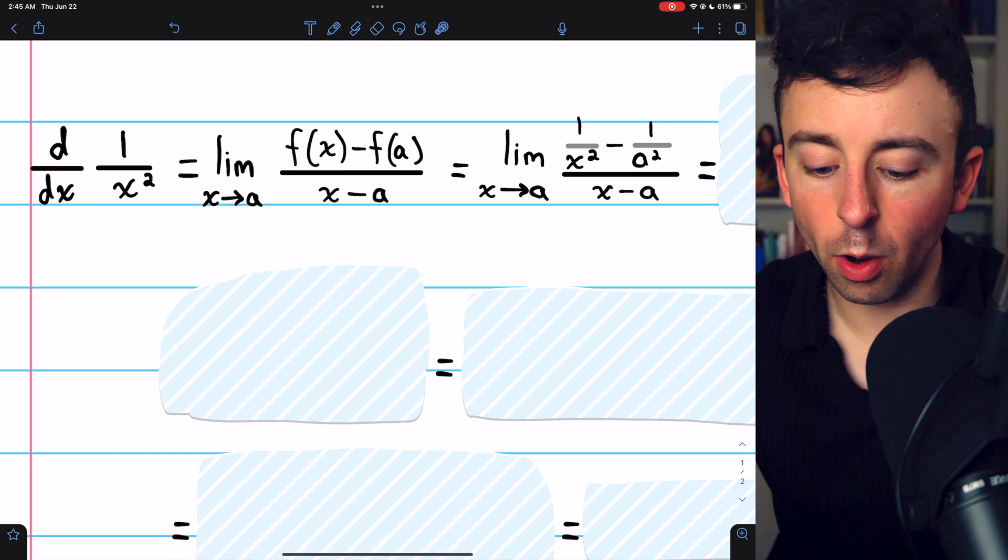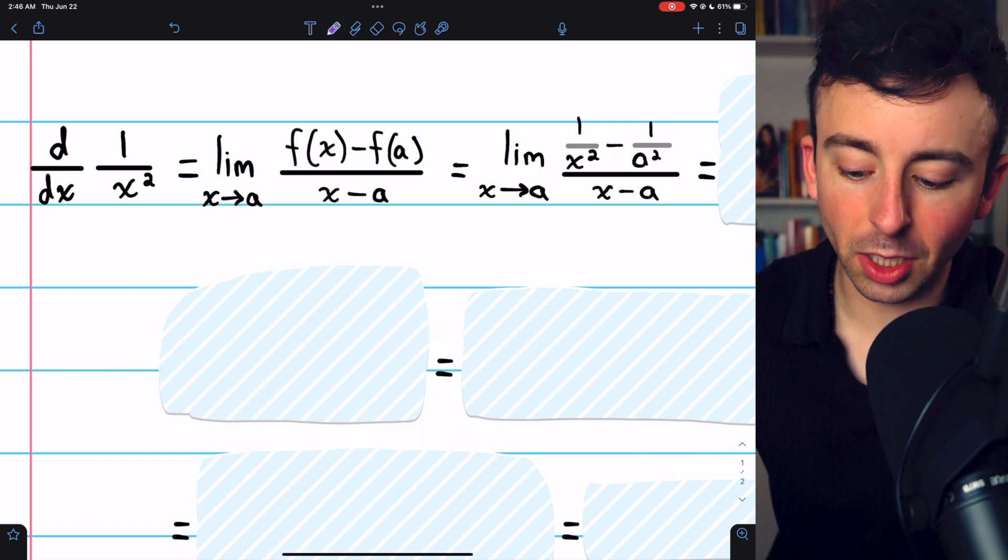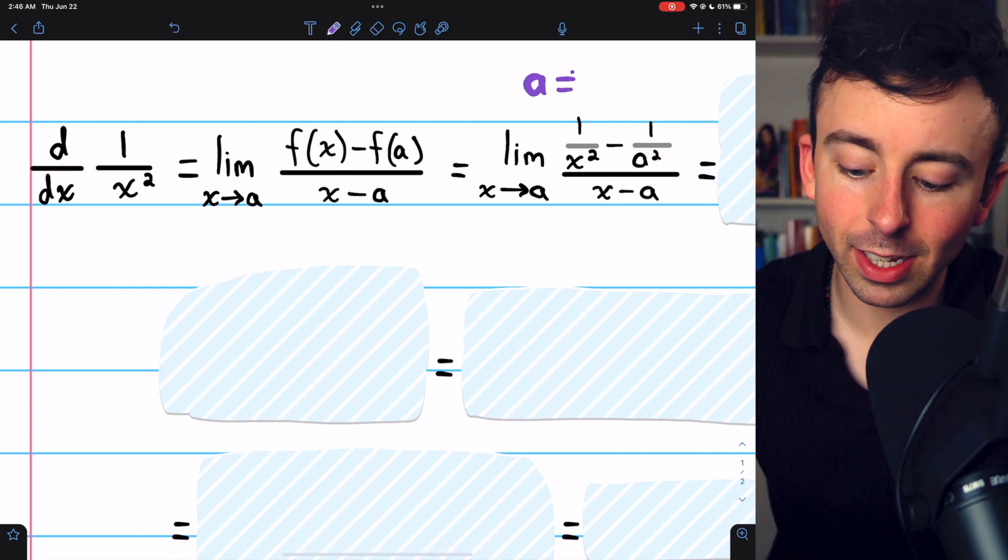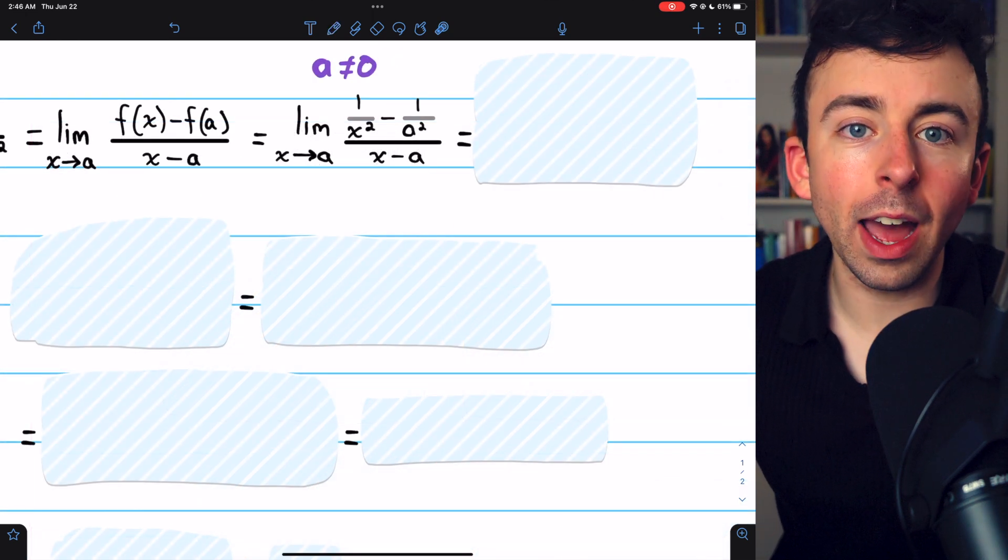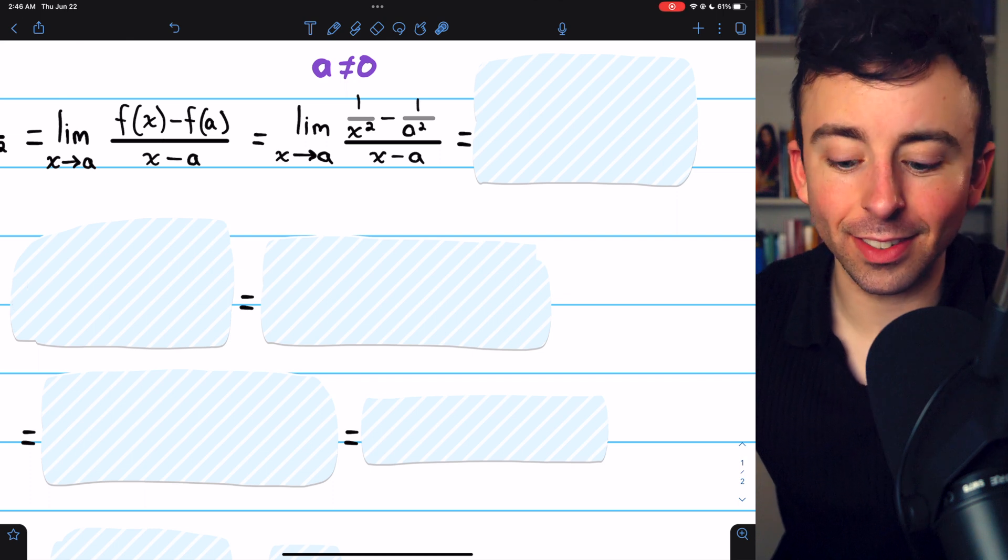Now, the occurrence of 1 over a squared, we can see clearly that a must not equal 0. Otherwise, none of this is going to make any sense. This function is not defined nor differentiable at 0.